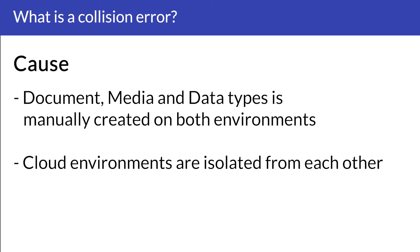One of the main reasons we get collision errors is when a document type, media type, data type, etc. is manually created on two environments using exactly the same alias. On Umbraco Cloud, each of the environments is isolated and does not know about the schema of another environment until they are synchronized. Therefore, creating the same document type in each of the environments would create a duplicate, and it will consider it a separate entity even though the document type looks exactly the same and shares the same alias in the back office of both environments.